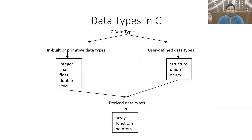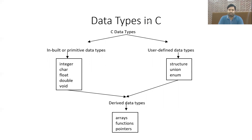Now we come to the important topic of data types. If you want to store some information in a C program, it is important to assign the type to the value you want to store. Data types are categorized into three types: inbuilt, which are predefined in the C compiler; user-defined, which you can create as a programmer; and derived data types, which are derived from inbuilt or user-defined data types.